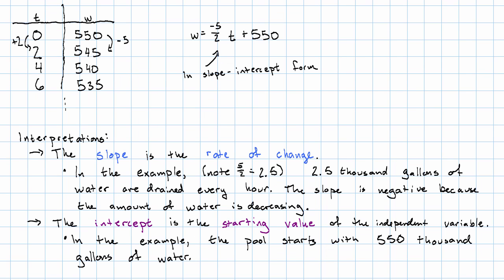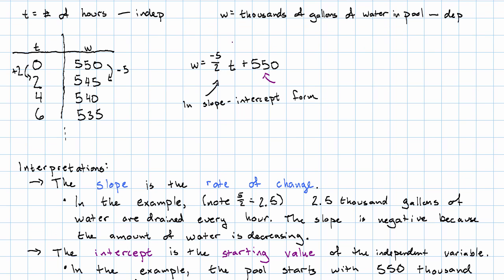The intercept can be interpreted as the starting value of the independent variable. So in the example, the intercept is 550. That's because the pool starts with 550,000 gallons of water. That is, the starting value of w is 550 thousand.